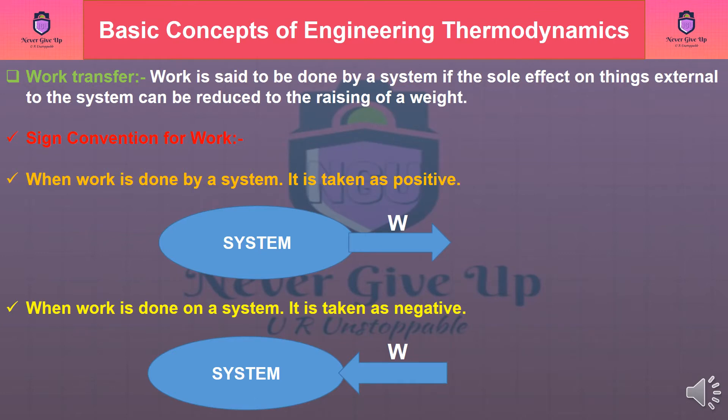Work is said to be done by a system if the sole effect on things external to the system can be reduced to the raising of a weight. Sign Convention for Work: when work is done by a system, it is taken as positive; when work is done on a system, it is taken as negative.